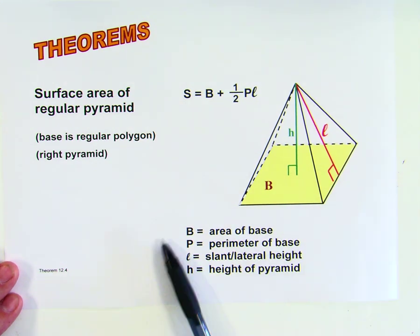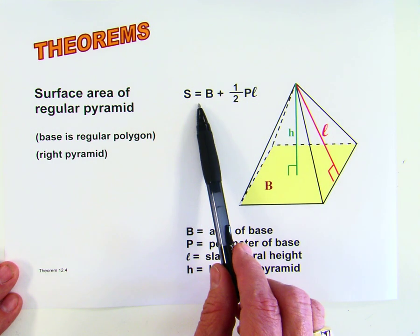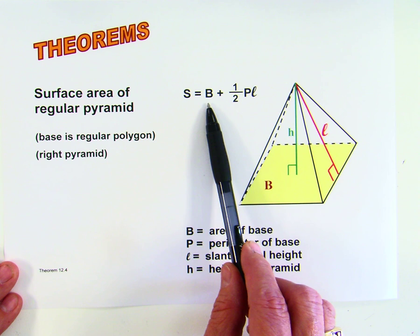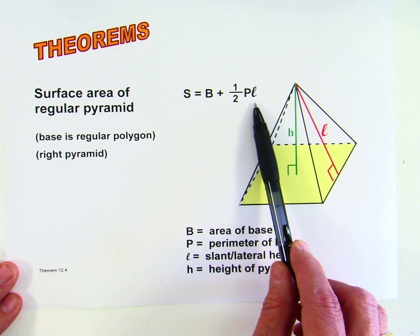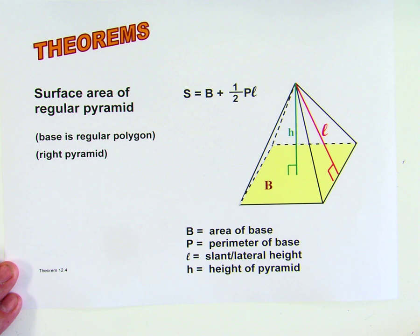Notice on here, again, the capital letters tend to stand for things that are generally calculated and the lowercase letters tend to stand for things that are generally measured. In this case, the surface area equals the area of the base plus half of the perimeter of the base times the slant height or the lateral height.